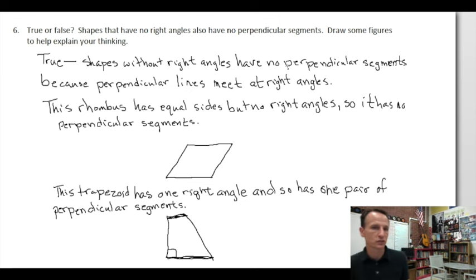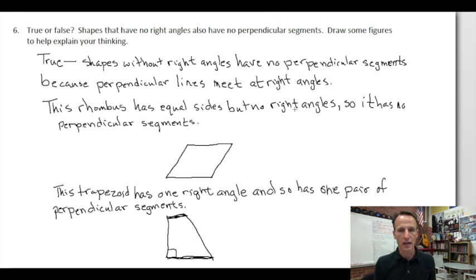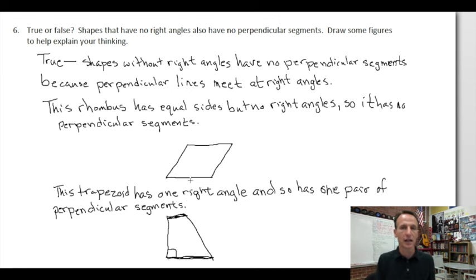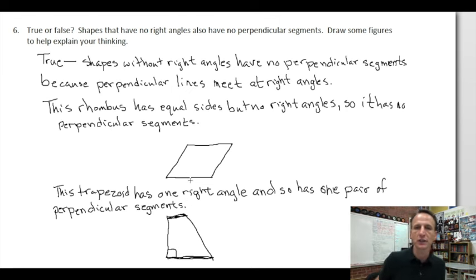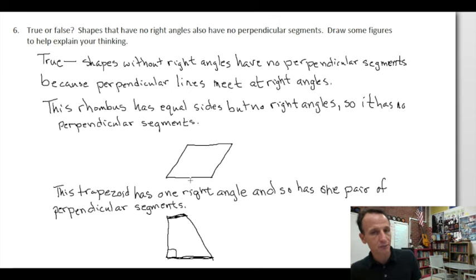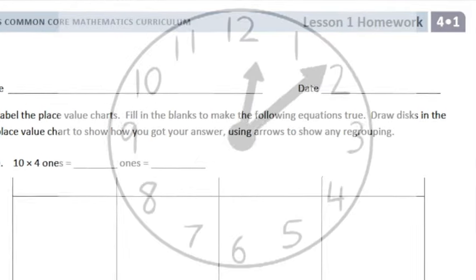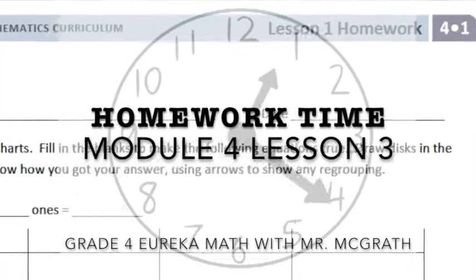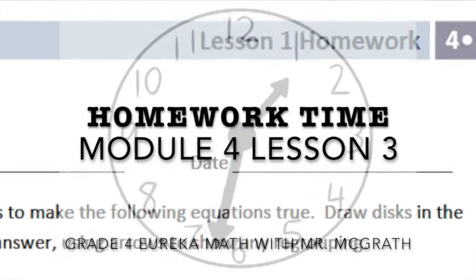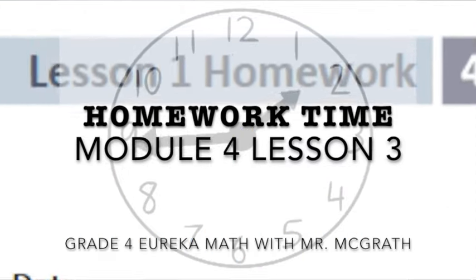Usually a textbook trapezoid has no right angle, but we proved that we can draw it with one right angle. So I think we drew some figures that help explain our thinking: where you have right angles, you have perpendicular segments; where you do not have right angles, you do not have perpendicular segments. And look what you did — you gone and done it again, you completed another homework time. I'll see you again next time — this is, once again, homework time. Bye-bye.